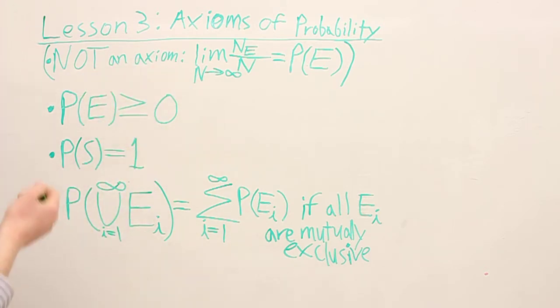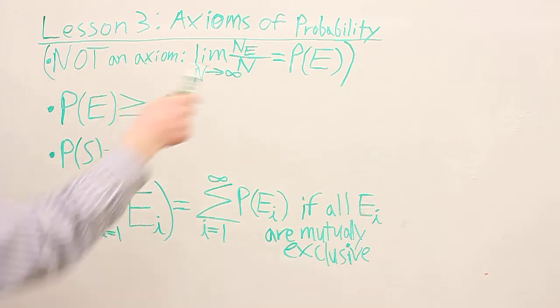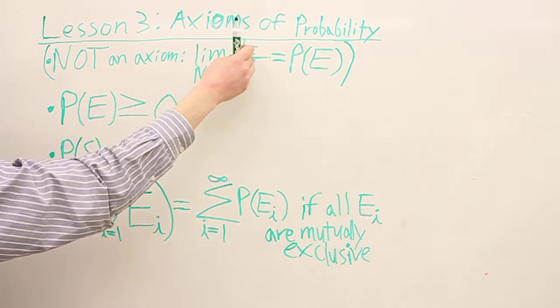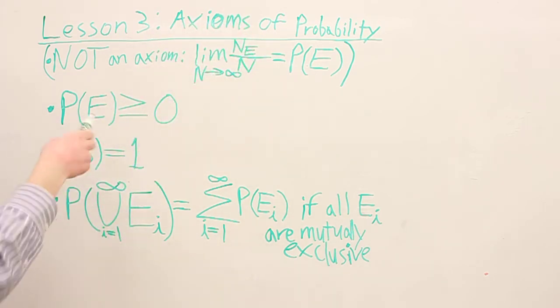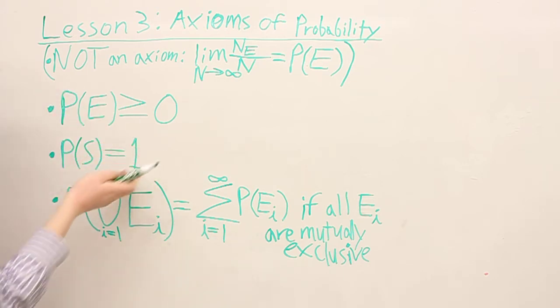Here's another axiom. The probability of the sample space is 1. Keep in mind, a set can be a subset of itself, so the sample space can be an event. That's actually pretty easy. Think about it. When is an outcome going to be in the sample space? It's always going to be in the sample space. So this fraction is going to be 1, which is why the probability of an outcome being in the sample space is 1.